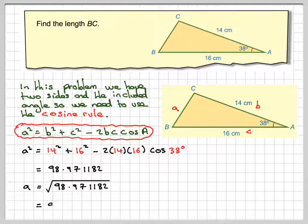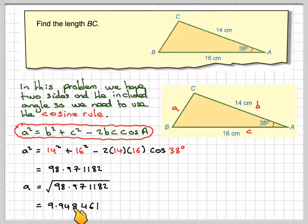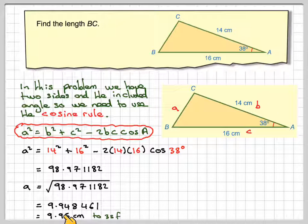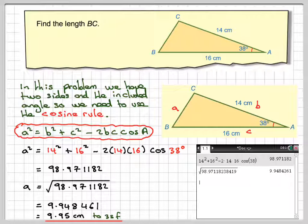Write down the full calculator value, and then round it off to 3 significant figures. So that 8 will make that 4 a 5, so it becomes 9.95 centimeters to 3 significant figures. And there you go, there's the screenshot. I hope you understood that. Thank you very much for watching this video.